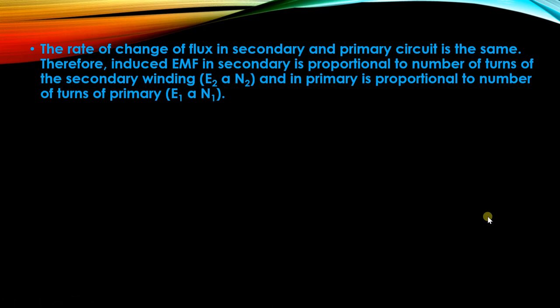The rate of change of flux in the secondary and primary circuit is the same. Therefore, the induced EMF in the secondary is proportional to the number of turns of the secondary winding: E2 is proportional to N2. Similarly, E1 is directly proportional to N1 — the number of primary windings is directly proportional to the EMF induced on the primary side.